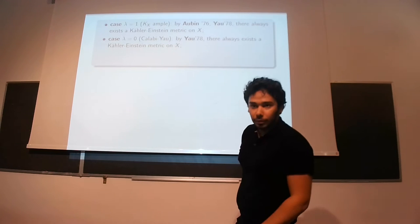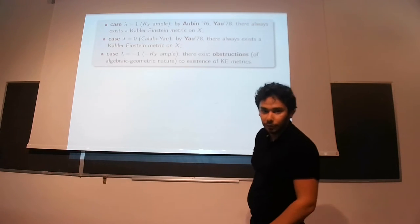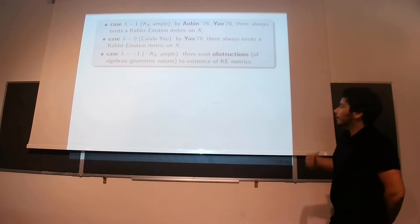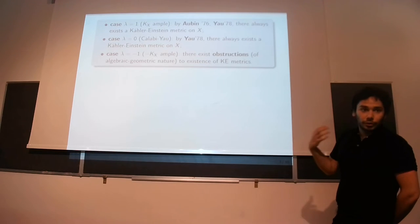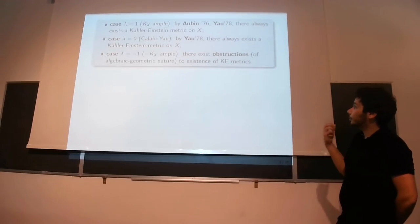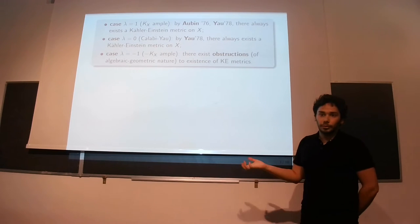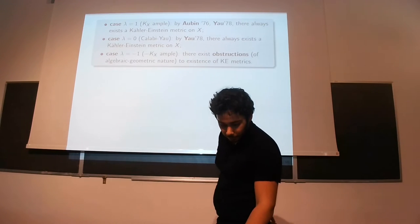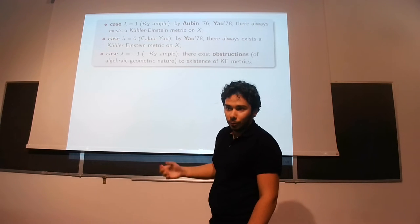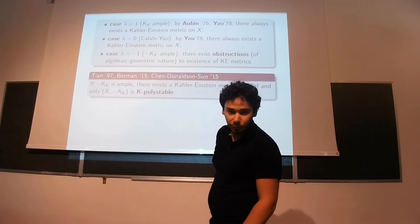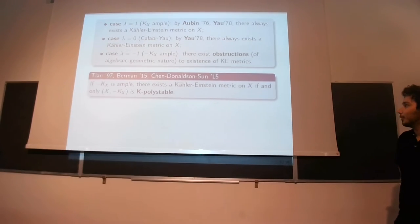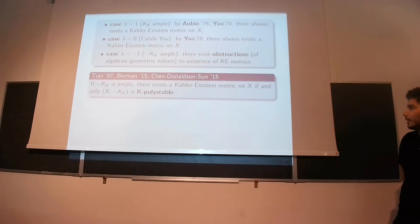The situation is much more complicated in the Fano case. And so if lambda equals one, which means that minus KX is ample, there are obstructions, so they're not always Kähler-Einstein metrics. And furthermore, these obstructions are algebraic geometric in nature. That was the Yau conjecture that's been solved for a couple of time.